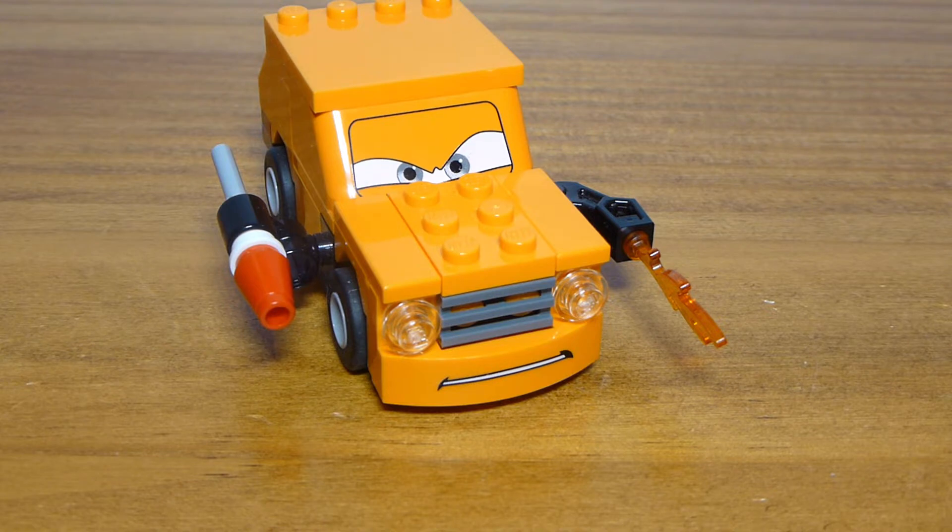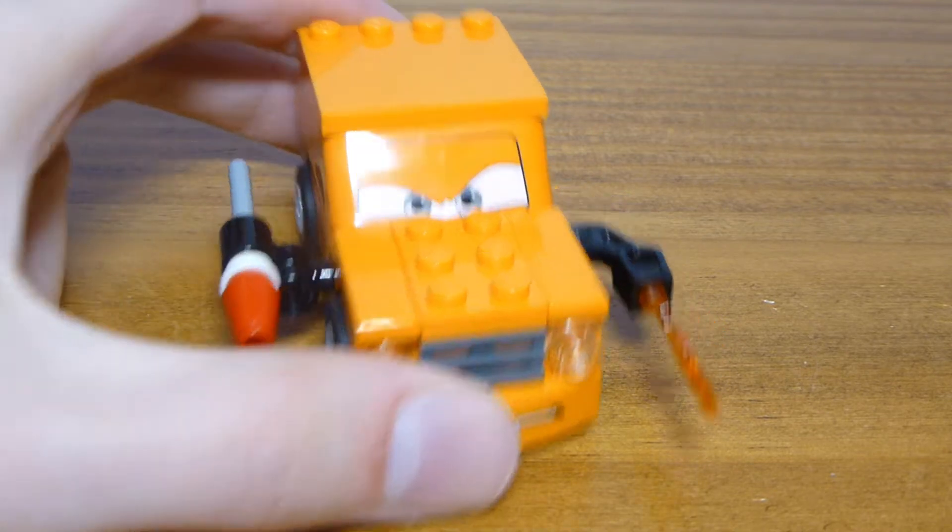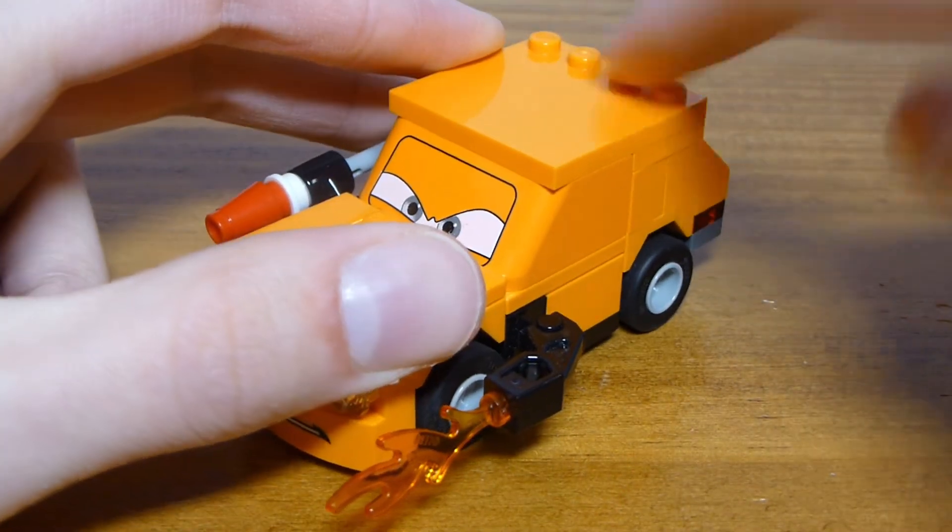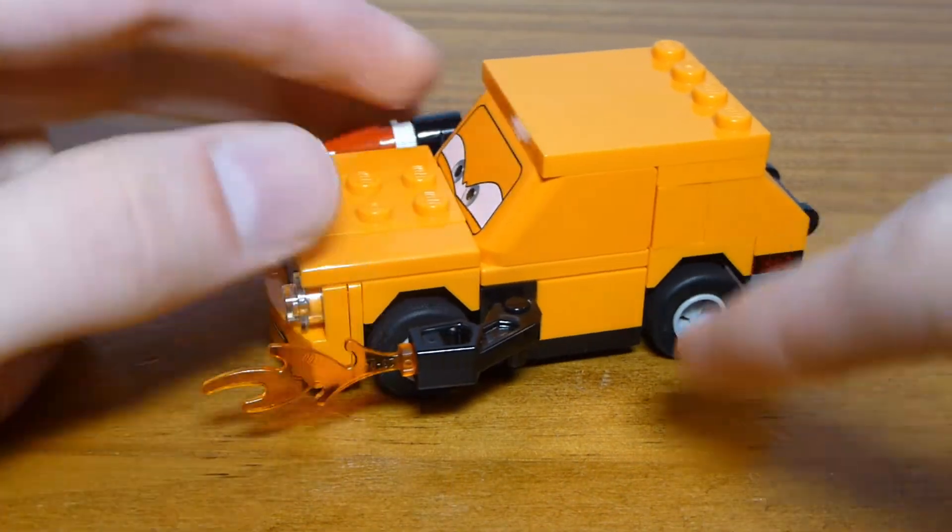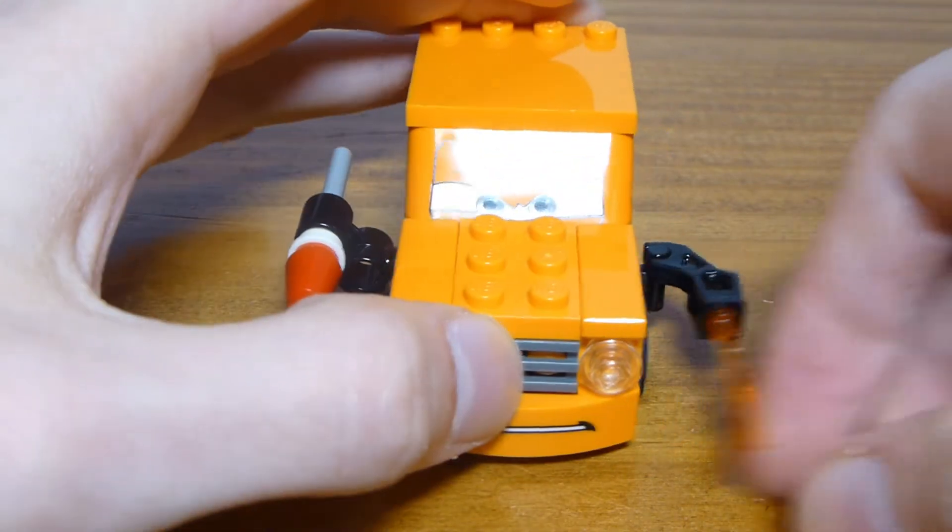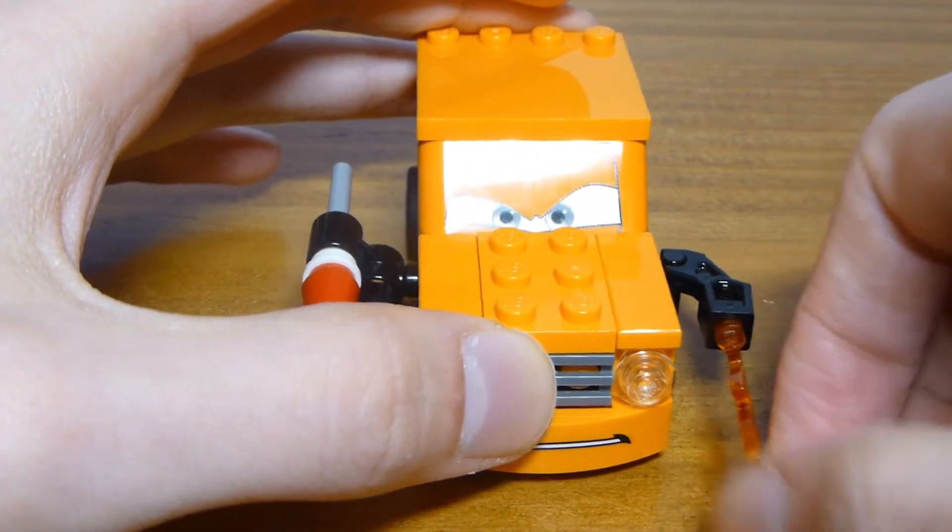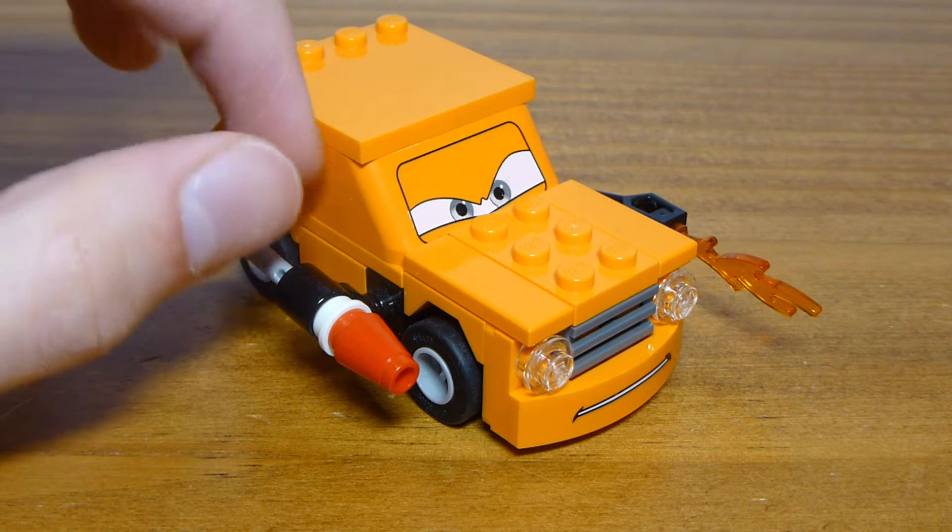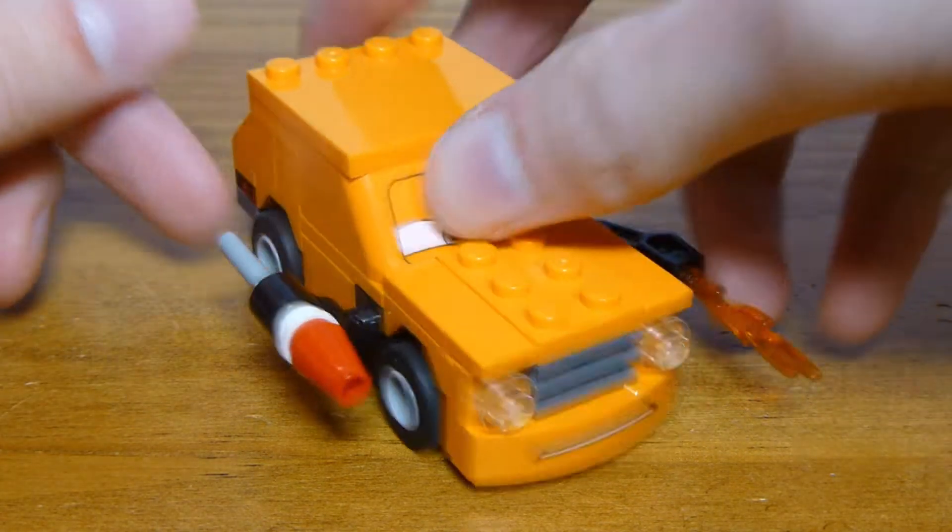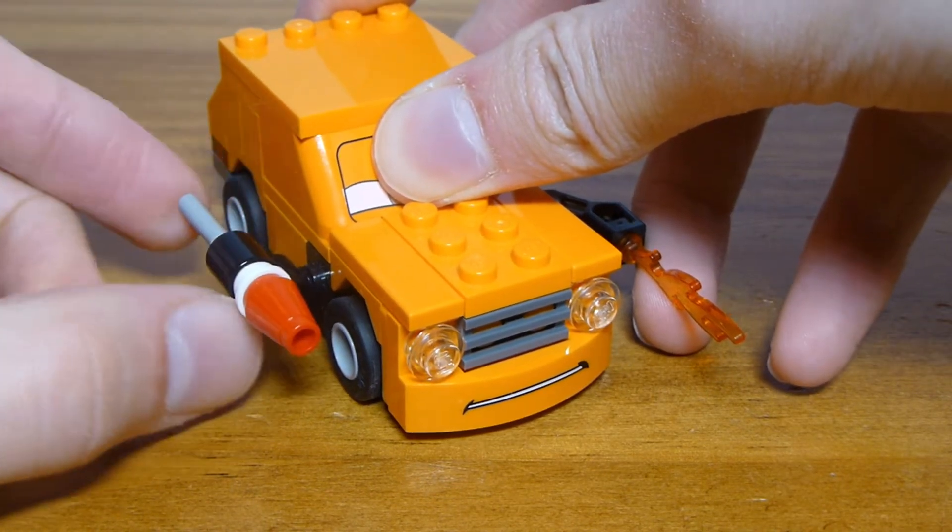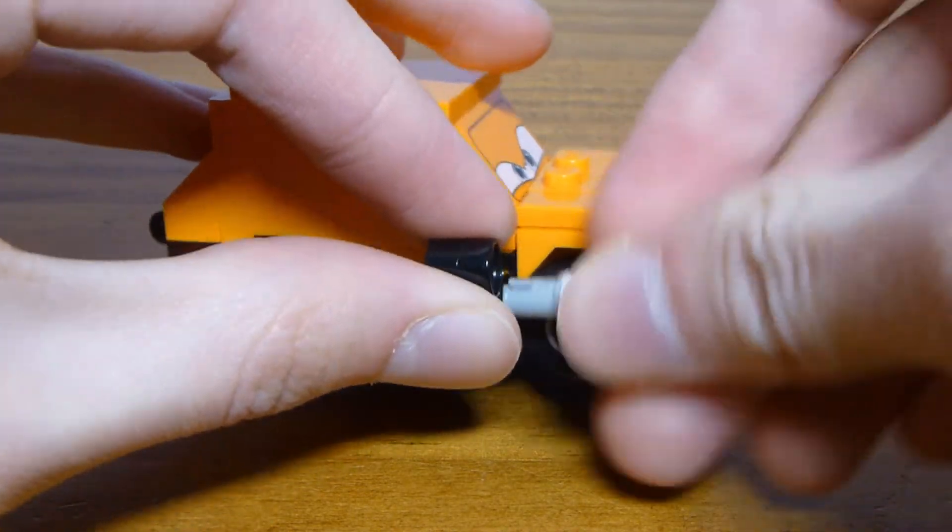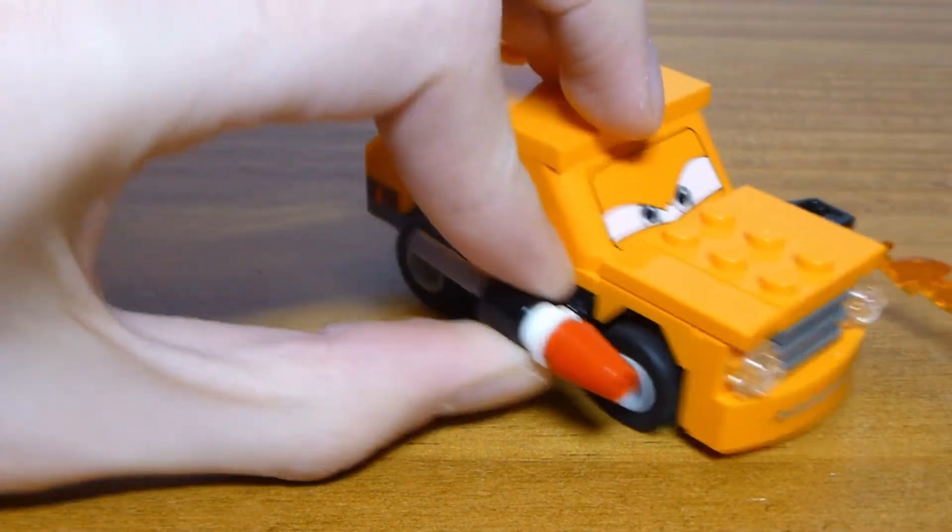The eyes are a good print, and he does have a little flamethrower that can be angled side to side, which goes along with the other welding versions of the cars like Acer that we got in some of the other sets from this year. He also has a flick fire missile which is the same design as Finn's, and it works fine.